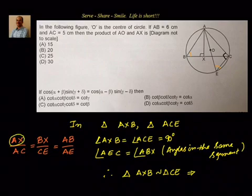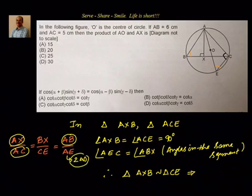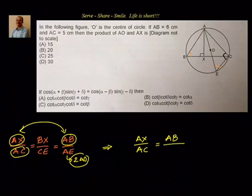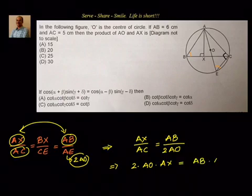We need AX. We know AC and AB, and AE equals 2 × AO. So everything we need is available from the first and last ratios. Writing that: AX ÷ AC = AB ÷ AE = AB ÷ (2 × AO). Cross-multiplying gives 2 × AO × AX = AB × AC. Therefore AO × AX = AB × AC ÷ 2.